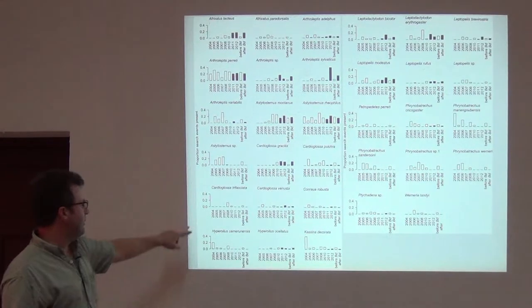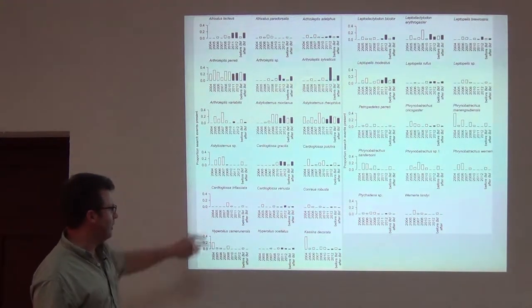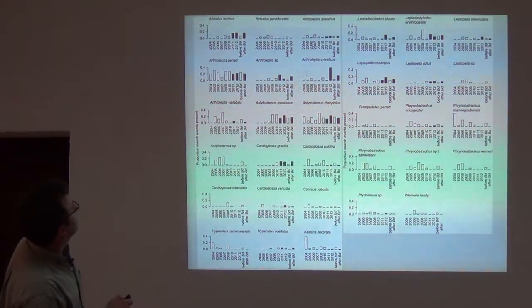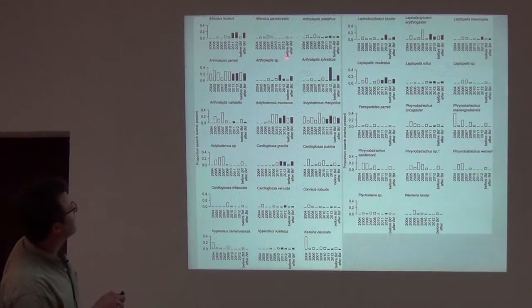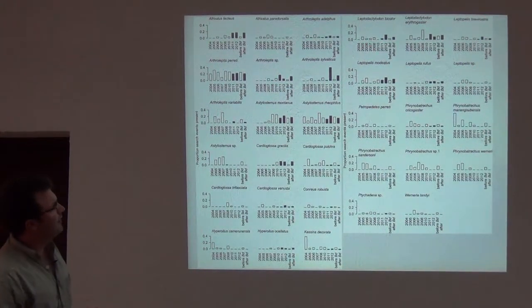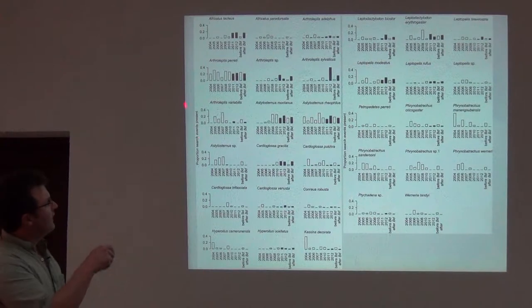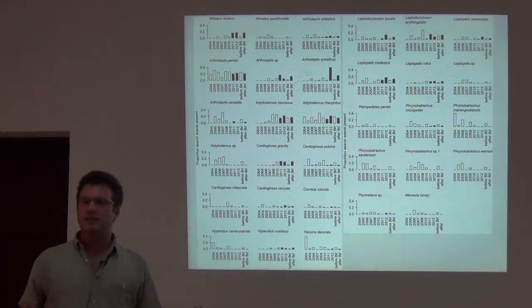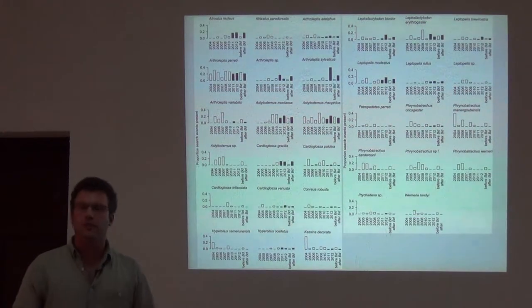Some of these are very uncommon, as true for types of Cardioglosa, some species of Afrixilis at high elevations at least are hard to find sometimes, some species of Leptodactilodon. But what you'll see is that each species is different. Some species have sort of high detectability, they're easy to find, some species are hard to find.